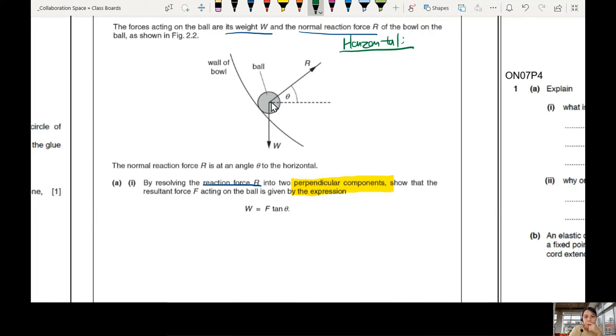So R is going to have a horizontal component and a vertical. Slanted, it's not exactly horizontal, not exactly vertical. W, W is fully vertical already. So we don't care about the W.